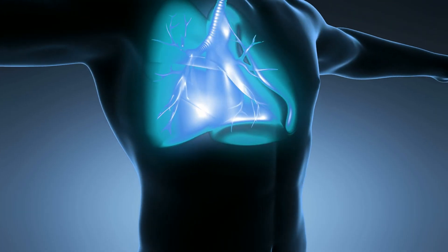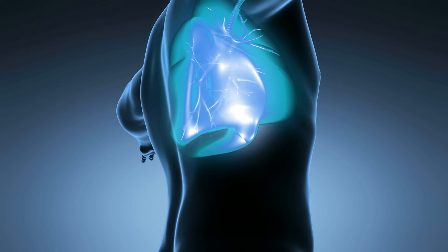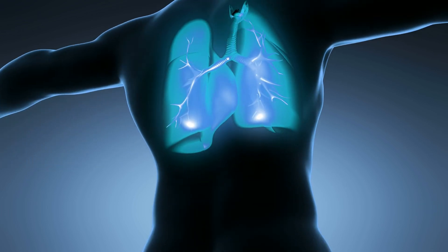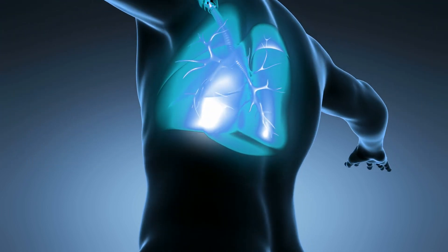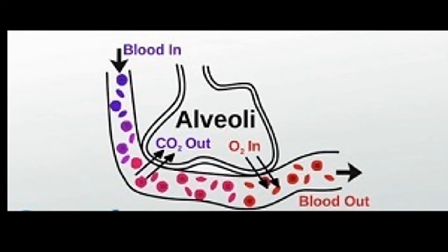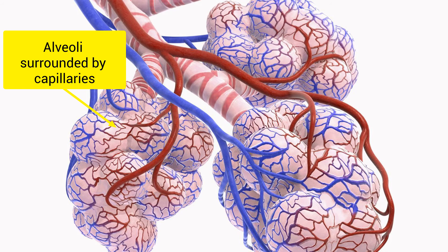Gas exchange takes place at the site of the lungs. When the air reaches the alveoli, oxygen will pass through the thin walls of these tiny air sacs in order to enter the bloodstream. Likewise, carbon dioxide will make its way from the bloodstream into the alveoli and the lungs in order to be exhaled. The alveoli are surrounded by capillaries to make it possible for air to move between the lungs and the bloodstream.